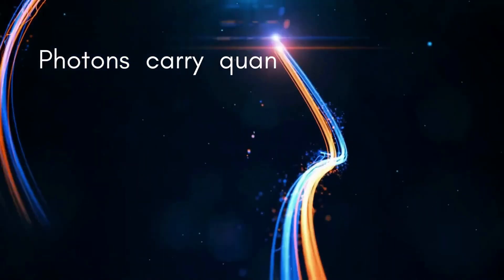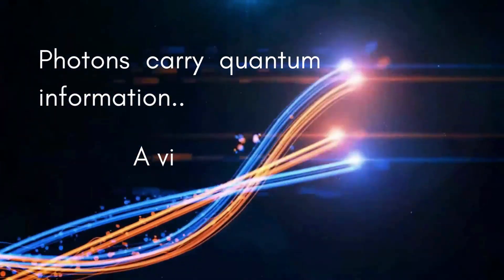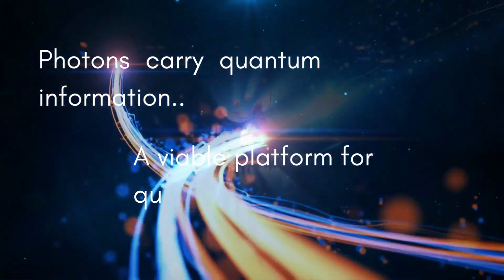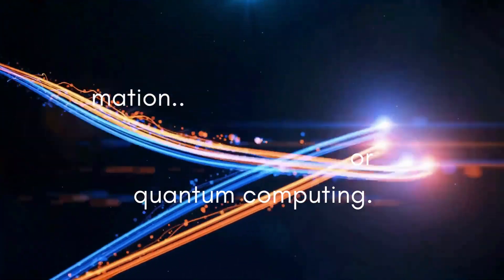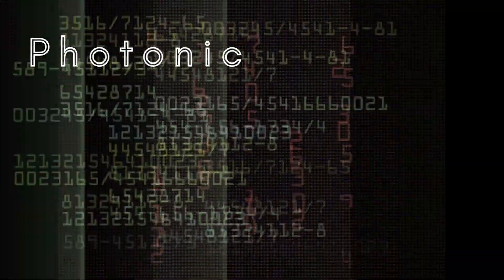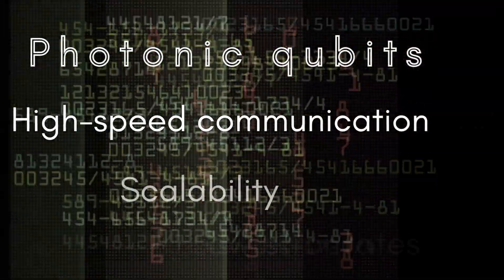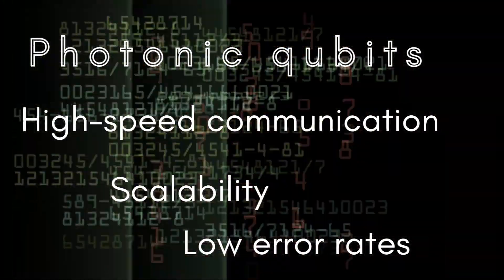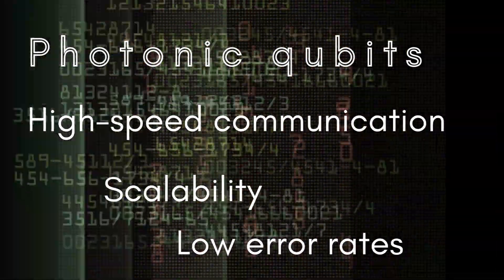Photonic qubits are quantum bits that are encoded in photons — the quanta of light. These qubits can be used to carry and process quantum information, making them a promising platform for quantum computing. Photonic qubits offer unique advantages including high-speed communication, scalability, and low error rates.